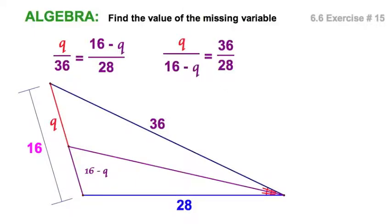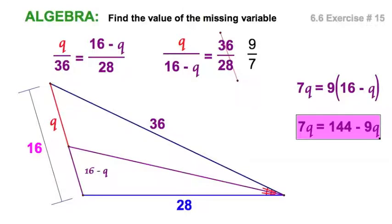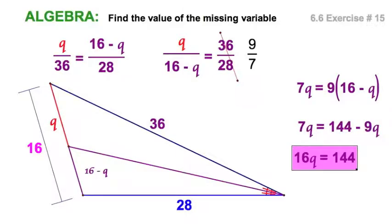Remember you can swap the means, or you could say q is to 16 minus q as 36 is to 28. That works well too. Now I'm going to choose that because I can divide out some common terms right there. So I've got a 4 there. So now when I cross multiply I got smaller numbers. And let's do our distributive property. And then add 9q to both sides. Divide by 16. And we're done.